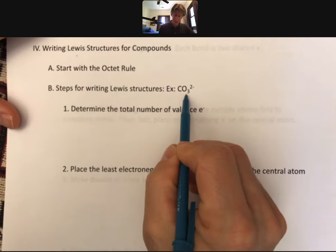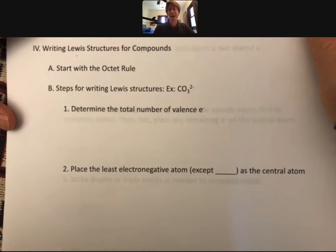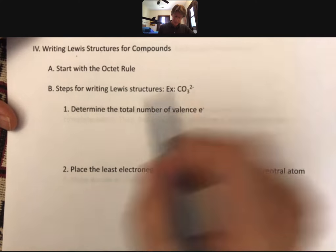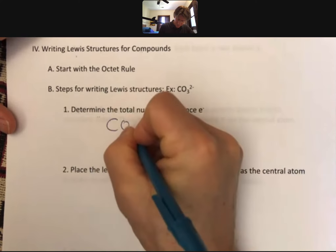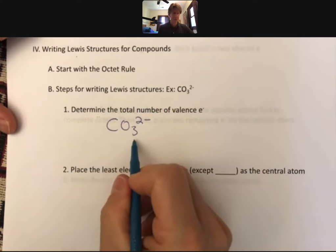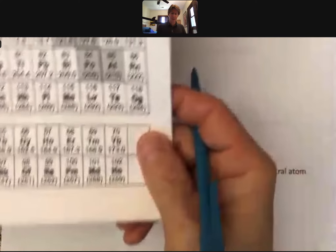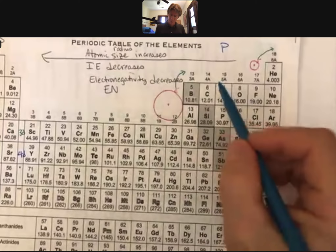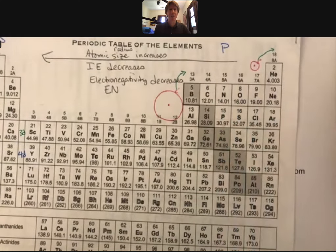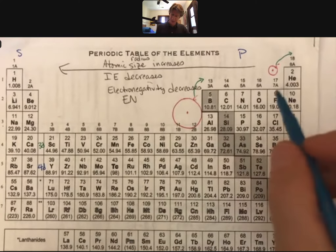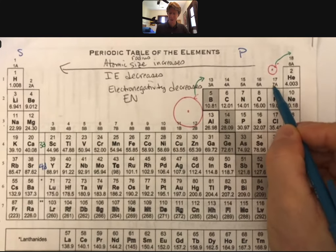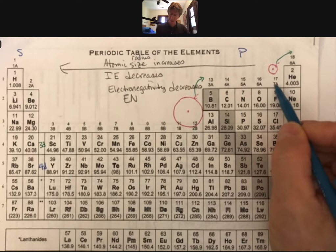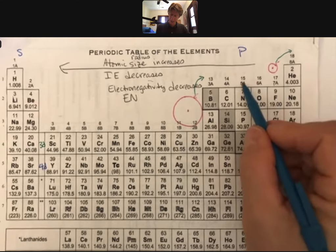Alright, so our first example is going to be carbonate. We're going to go through the steps for writing Lewis structures, and these are my steps. There are other ways to do it that you can find on the internet, up to you how you do it. So my first step is determine the total number of valence electrons. So what I like to do is just rewrite the formula here. I've got my periodic table, and if we look at our periodic table, we can use the numbers at the top as a way to estimate the number of valence electrons.